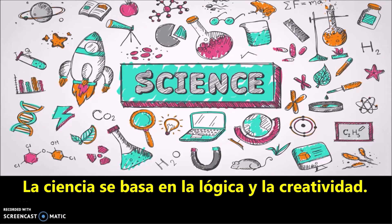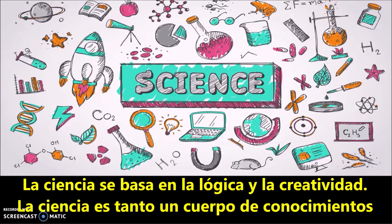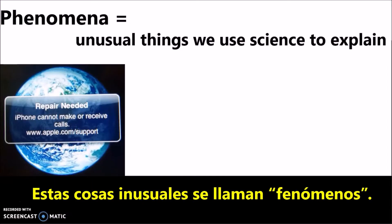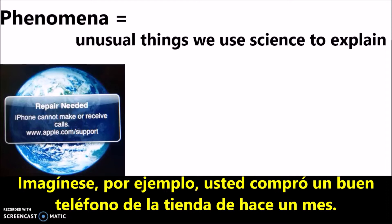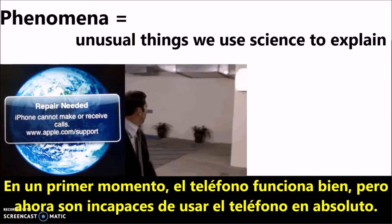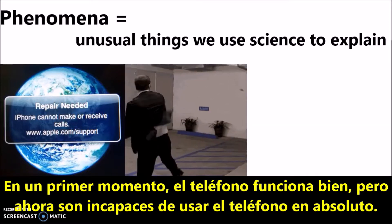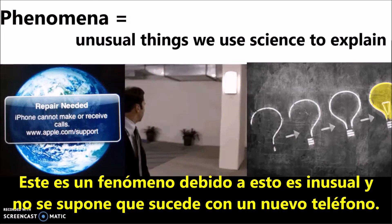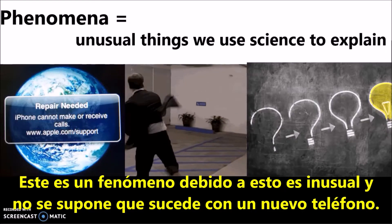Science relies on logic and creativity. Science is both a body of knowledge and a way of knowing about the unusual things happening around us. These unusual things are called phenomena. Imagine, for example, you bought a perfectly good phone from the store a month ago. At first the phone works fine, but now you are unable to use the phone at all. This is a phenomenon because it is unusual and not supposed to happen with a new phone.